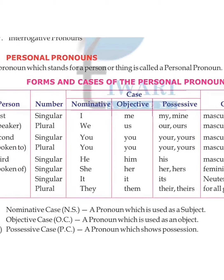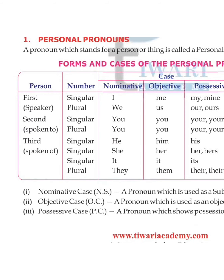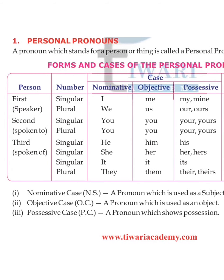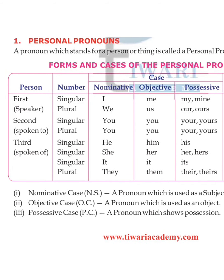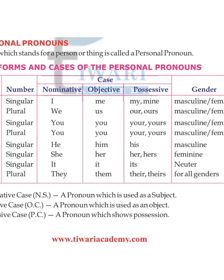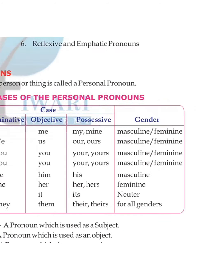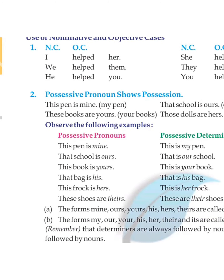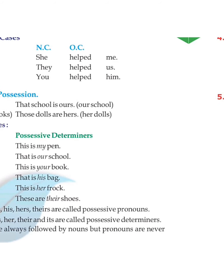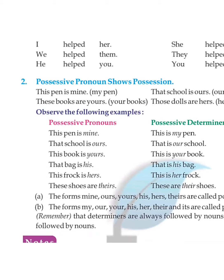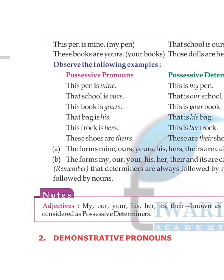The nominative case is a pronoun used as a subject. The objective case is a pronoun used as an object. Examples: 'I helped her', 'We had them', 'He had you', 'She had me', 'They had us', 'You had them'. The possessive case shows ownership or possession.